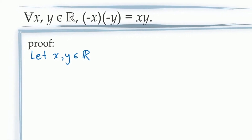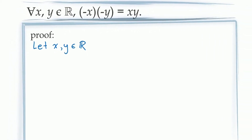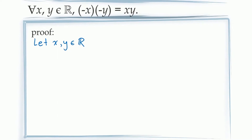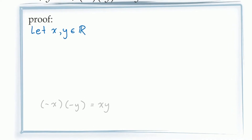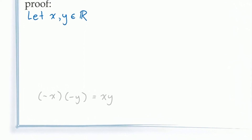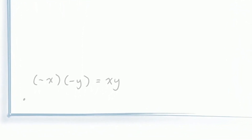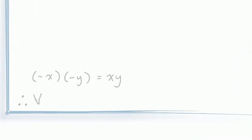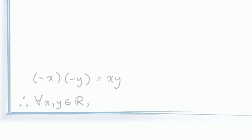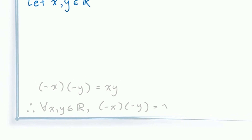From here, we need to demonstrate that for these arbitrary constants, negative x times negative y is equal to xy. And assuming we're able to do that, the principle of universal generalization will allow us to conclude that this is true for all real numbers x and y. Next, we need our demonstration.